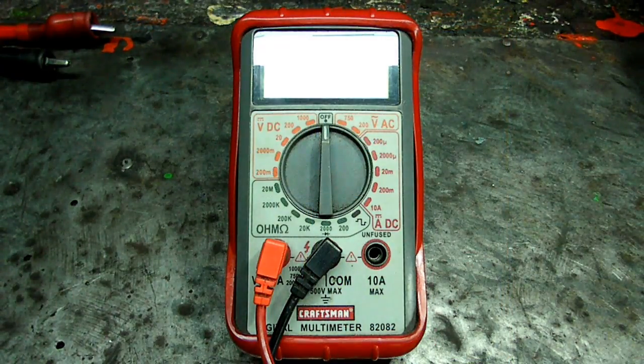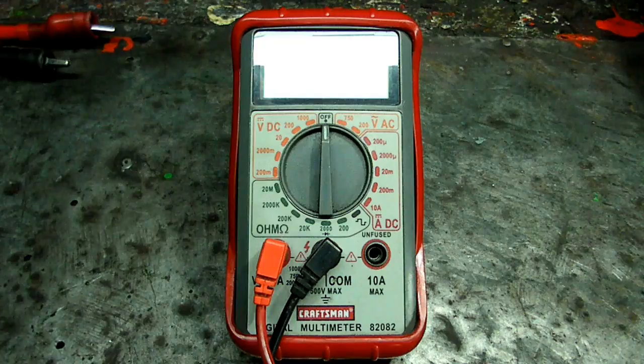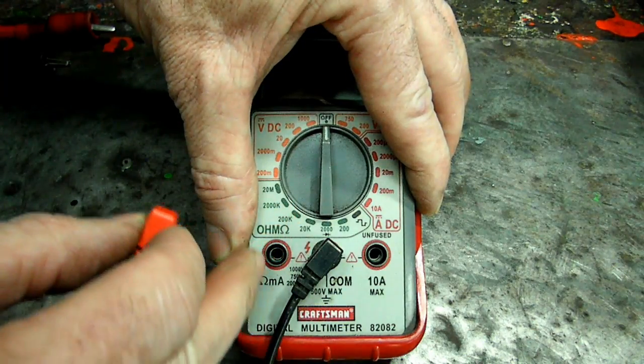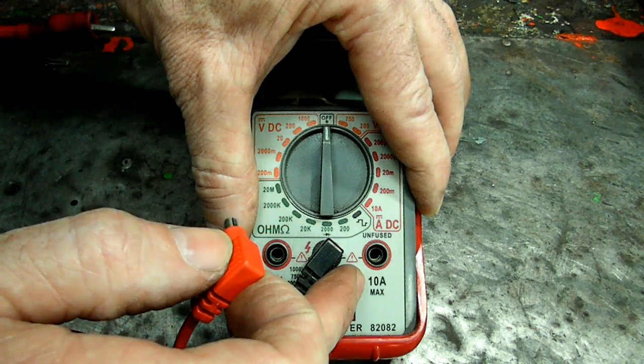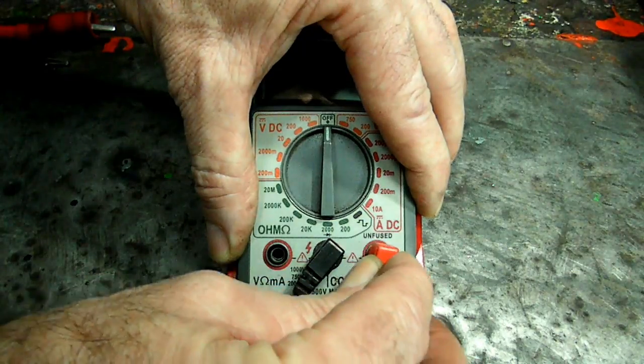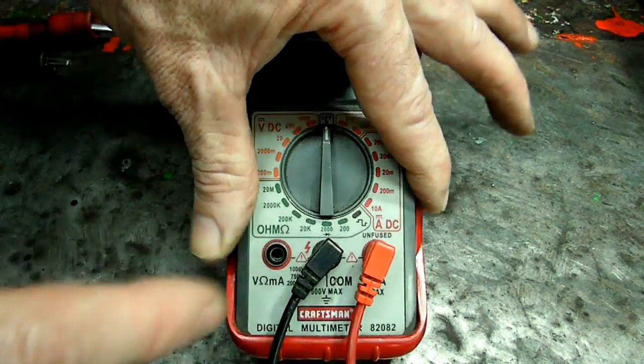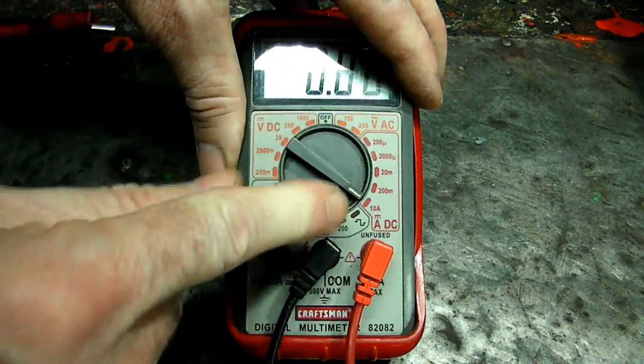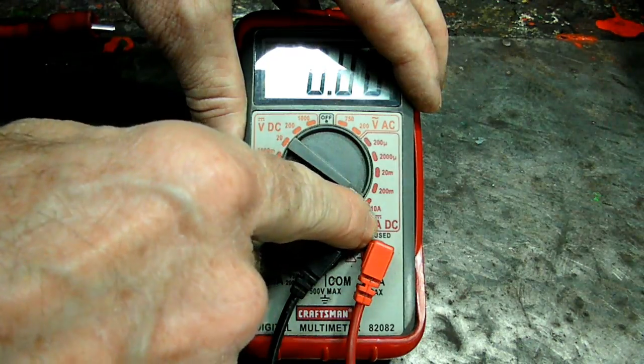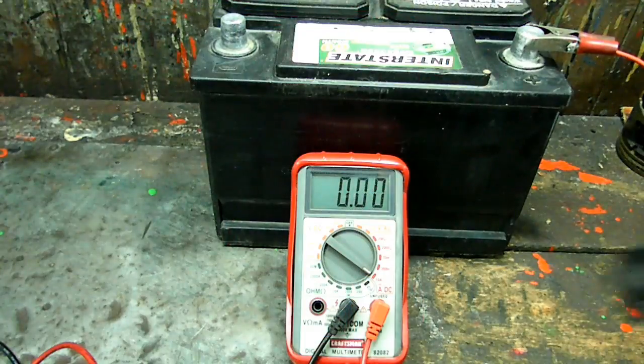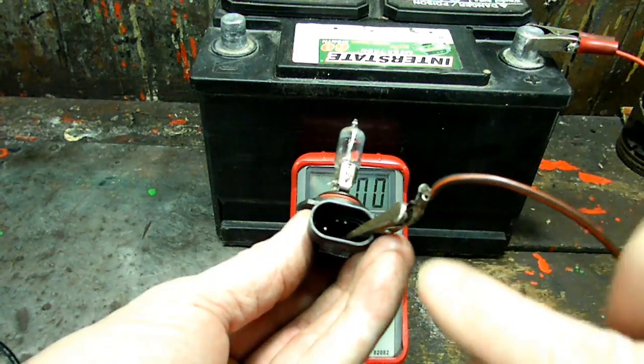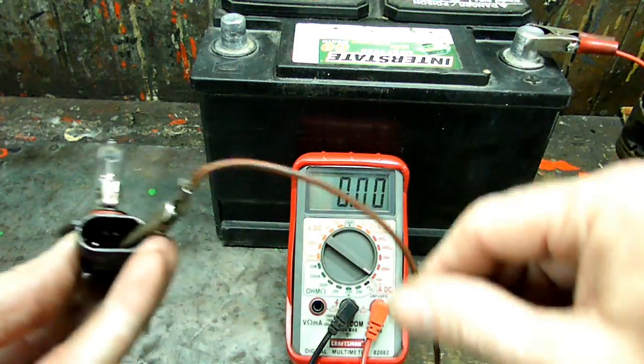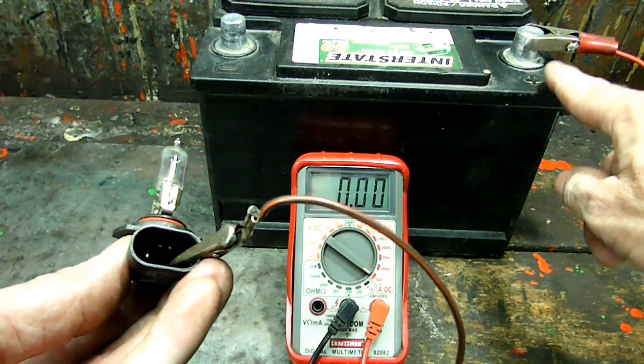Next thing we're going to do is check amperage, how much amperage a particular item is drawing. So what we have to do is take this red lead out of this side and move it over to this one right here that says 10 amps max. Now if your meter doesn't have this you cannot do this test. Then we move our scale down to 10 amps DC. Now I've got one lead clipped into the headlight bulb that we're on the positive. Here is the other end of that wire there to the positive side of the battery.